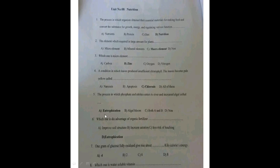A disadvantage of organic fertilizers is that when applied to soils, phosphate and nitrite can enter nearby rivers or water bodies, increasing nutrient concentration there — this leads to eutrophication.